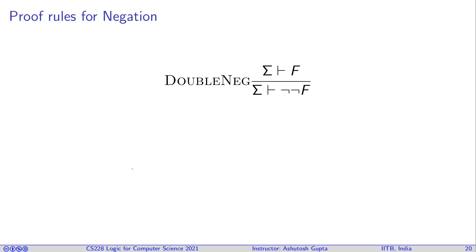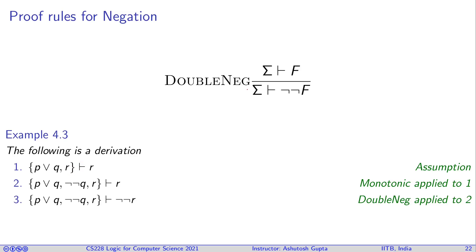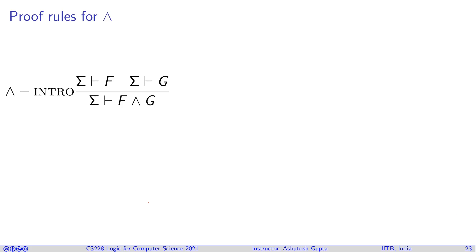One basic proof rule is Double Negation introduction: if σ ⊢ F, then σ ⊢ ¬¬F, and you can check with a truth table that this holds. In a derivation, suppose we have proven R from a set; we can apply Monotonicity to place it in a larger set, then introduce the double negation by applying the Double Neg rule, citing the line number we are applying it to.